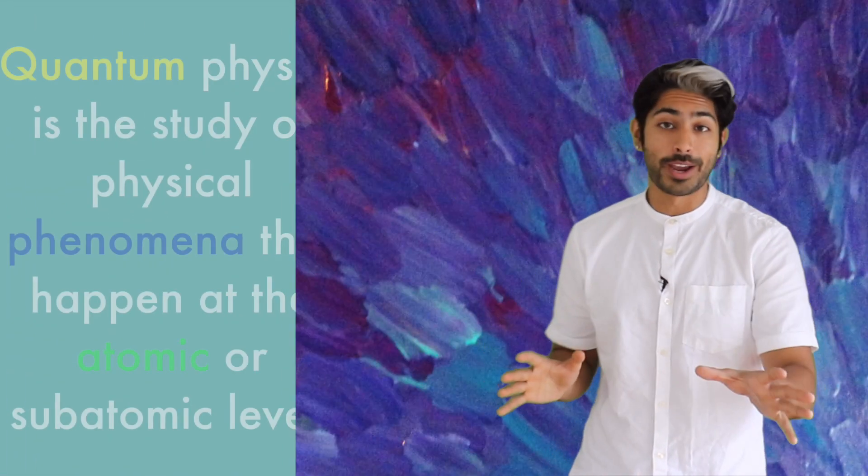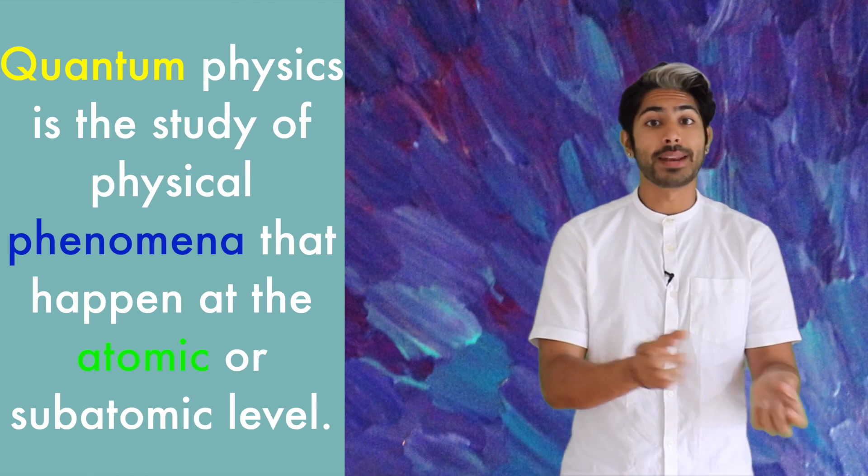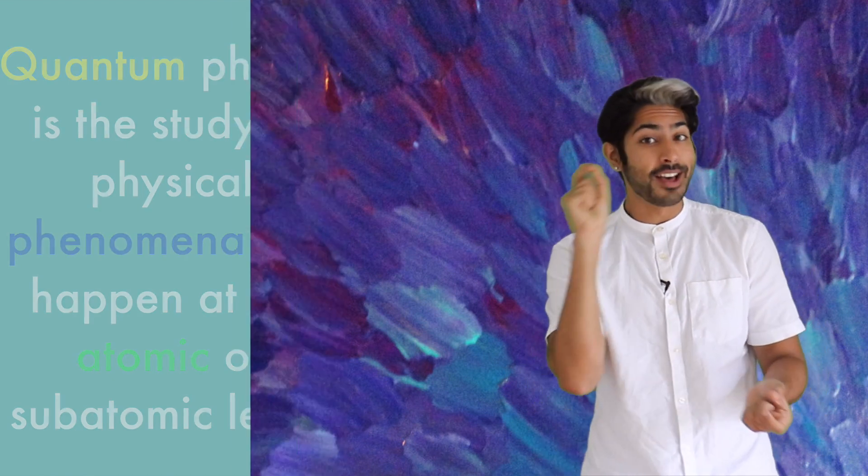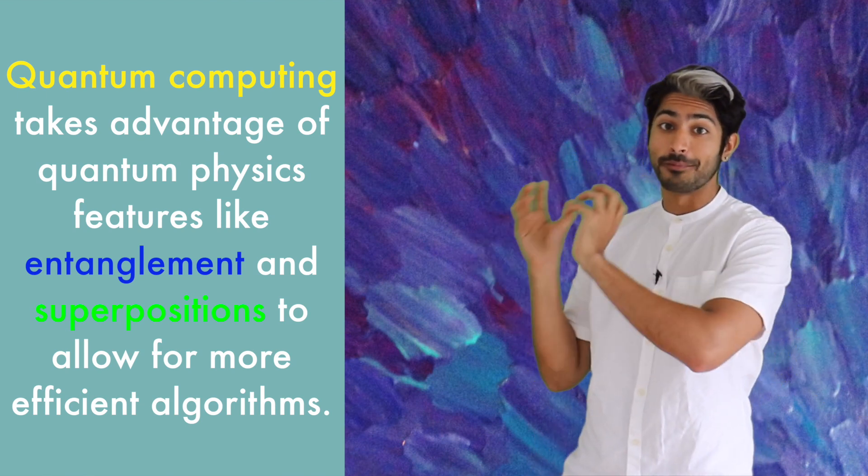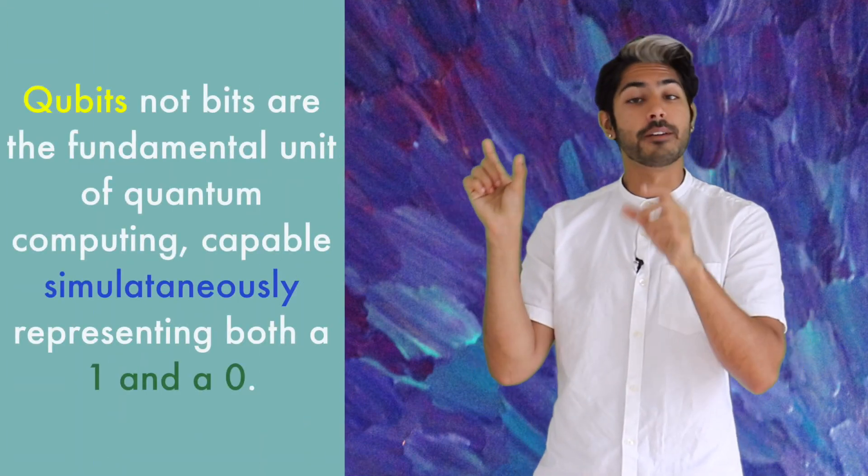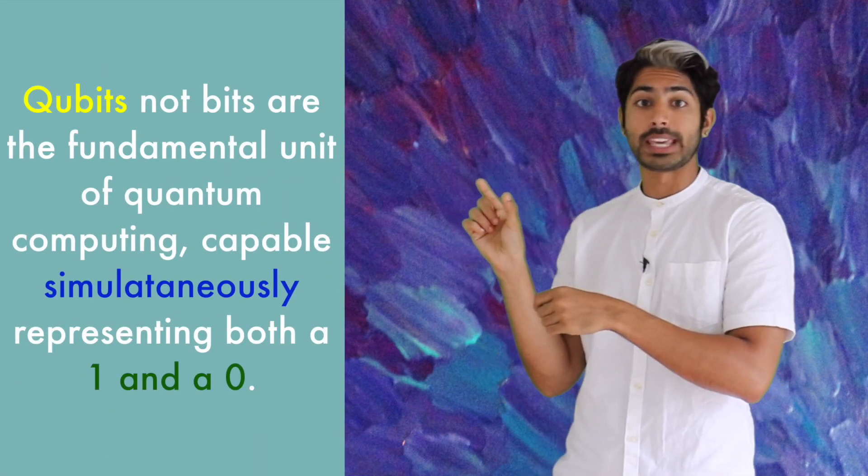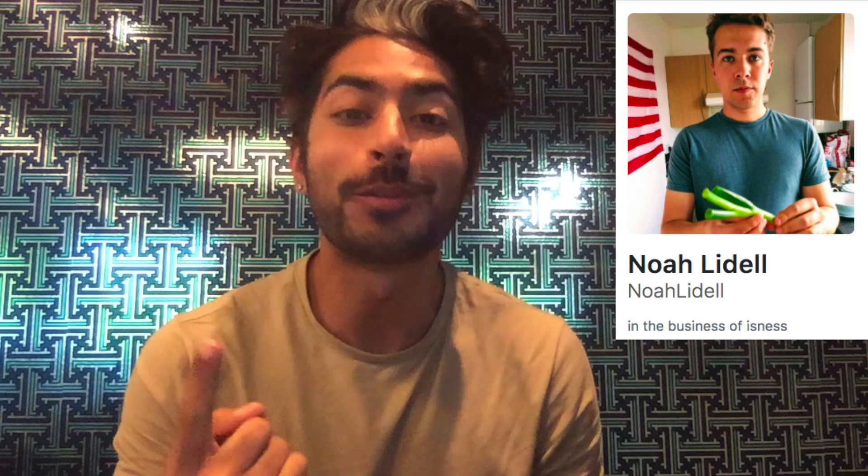So there are three takeaways here. Quantum physics is the study of physical phenomena that happen at the atomic or subatomic level. Quantum computing takes advantage of quantum physics to allow for more efficient algorithms. And qubits, not bits, are the fundamental unit of quantum computing, capable of simultaneously representing both a one and a zero.